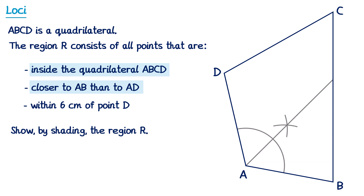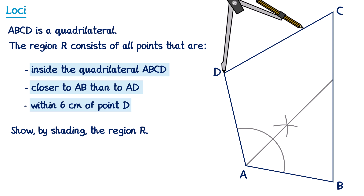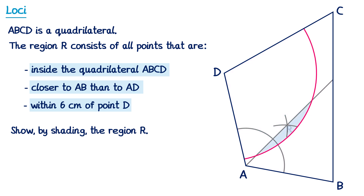Now for the final condition — within 6cm of point D — we take a pair of compasses opened to 6cm and draw an arc around point D. We don't need the full circle since points must be inside the quadrilateral. The region R is the overlap: inside the angle bisector's region and inside the 6cm arc. That overlapping region in the middle is the answer.